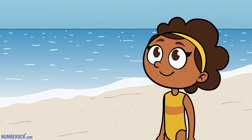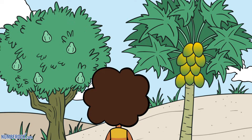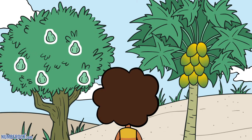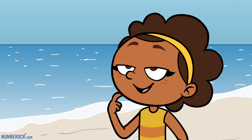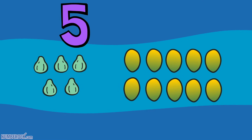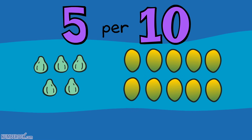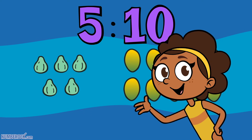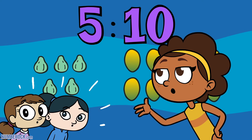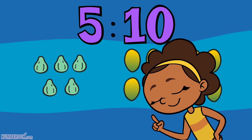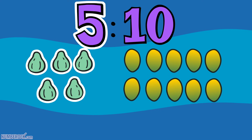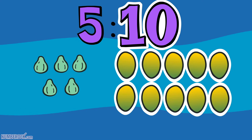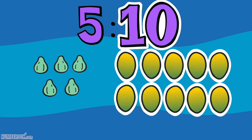I found, right by the player, five guavas and ten papayas. The ratio describing them can be written as five per ten, with a symbol like a colon. It's kind of like a fraction, but it's not a part of the comparison — it's relating the number of guavas to the number of papayas.